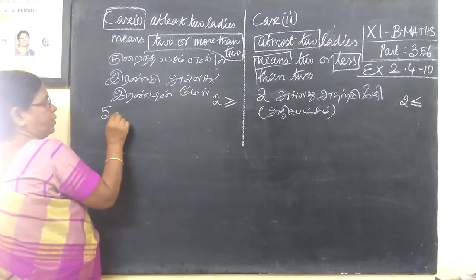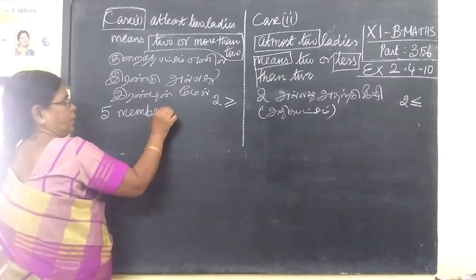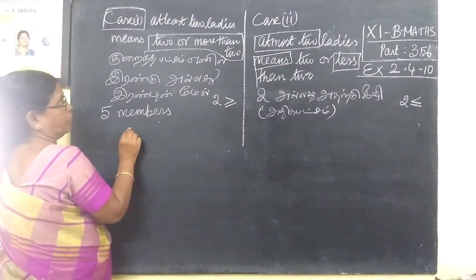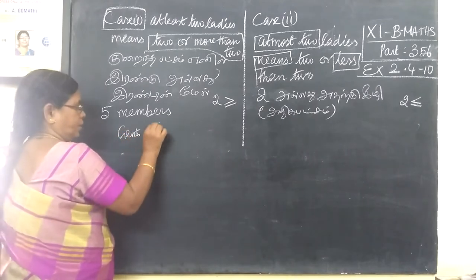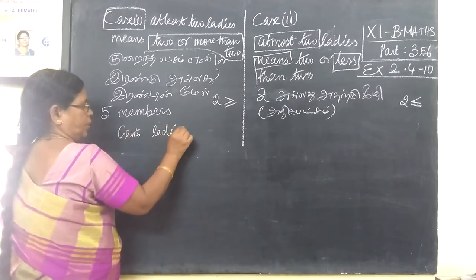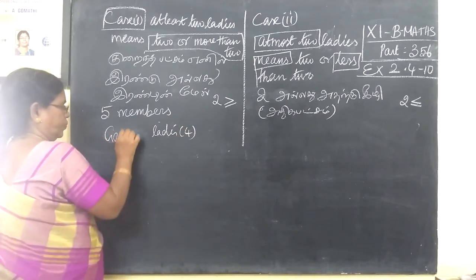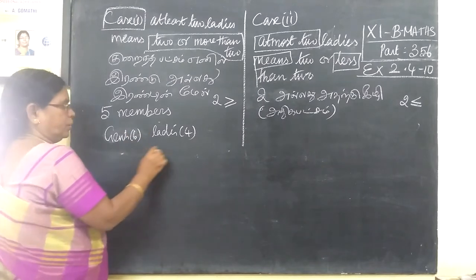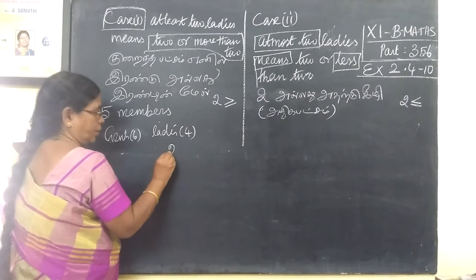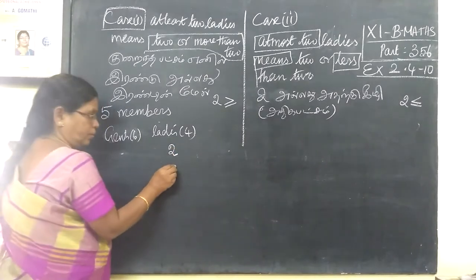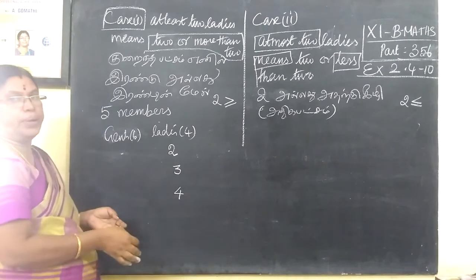We have five members. Two ladies or more. This is 4 ladies. Then, if you think about the ladies — at least two ladies, at least three ladies, at least four ladies.